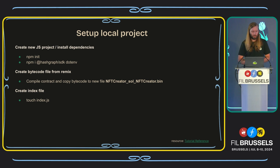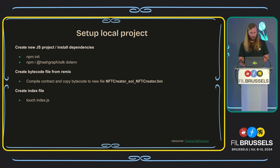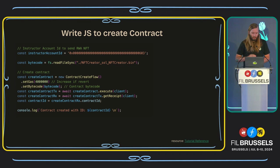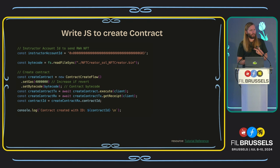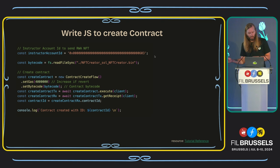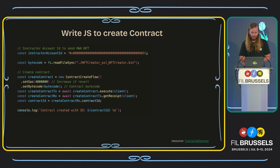In your project, first you can run npm init, then install both .env and the Hashgraph SDK, then compile the bytecode and put it into your nftcreator.sol bin file, and then create an index file. This is the code you need to create the contract. First you need the instructor account ID. On Hedera, we have two different account IDs: native Hedera accounts and the EVM equivalent accounts. I am just hard-coding the EVM equivalent account of an account to send this to, which is in the project files — usually 0.0.12345 as a Hedera native account ID.